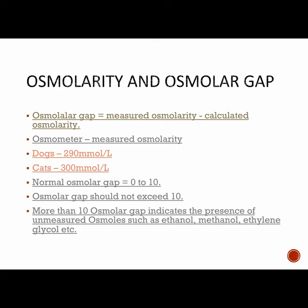The osmolar gap is the difference between measured osmolarity and calculated osmolarity. Measured osmolarity is estimated with an osmometer. The osmolar gap cannot exceed 10; a value more than 10 indicates the presence of unmeasured osmols — for example, methanol, ethanol, and ethylene glycol. These toxicities present with high anion gap metabolic acidosis. Normal osmolarity in dogs is 290 mmol/L; in cats it is 300 mmol/L.